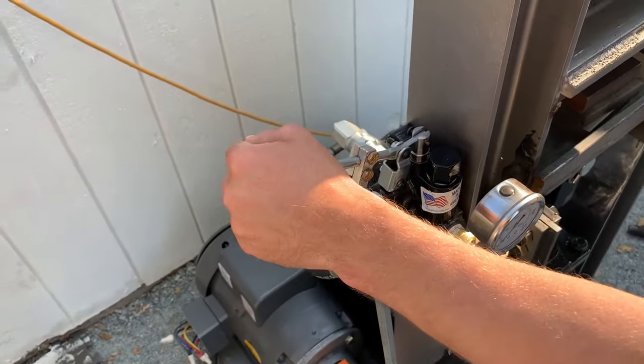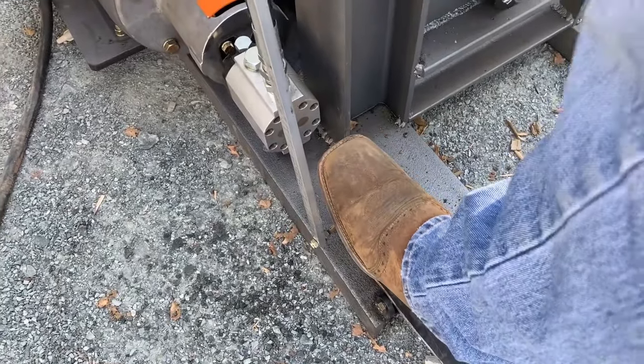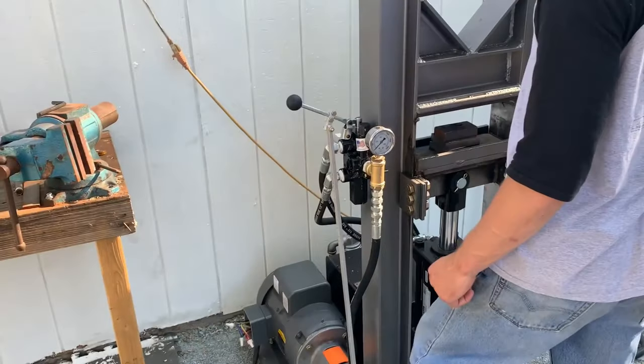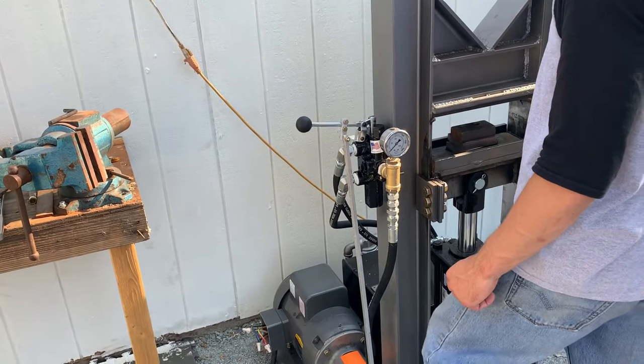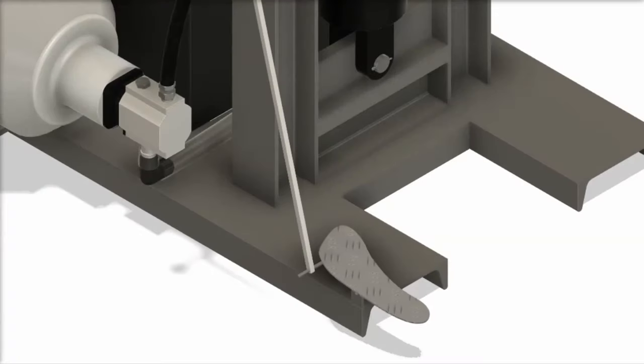The control valve is typically operated by rotating the lever up or down. Because we are building our press for blacksmithing, we want to keep both of our hands freed up in order to control the steel that we are squishing. We accomplish this by hooking up a foot pedal to the lever.